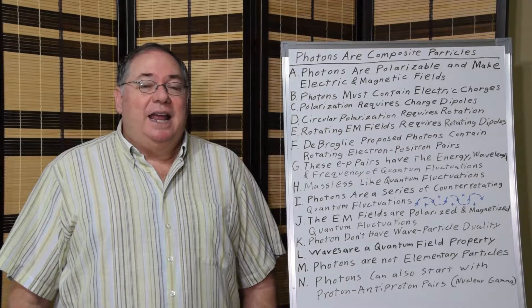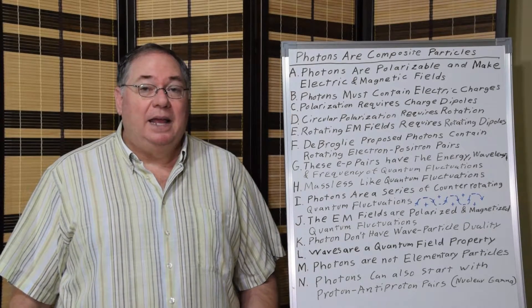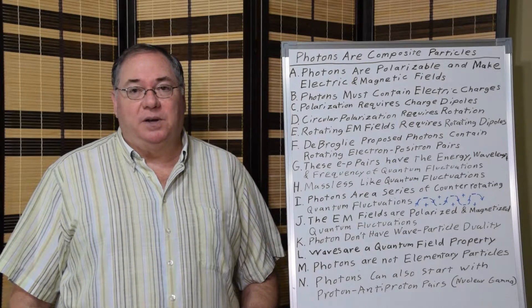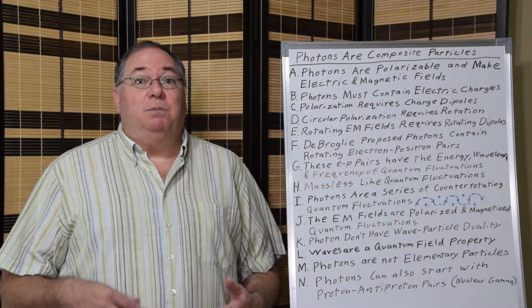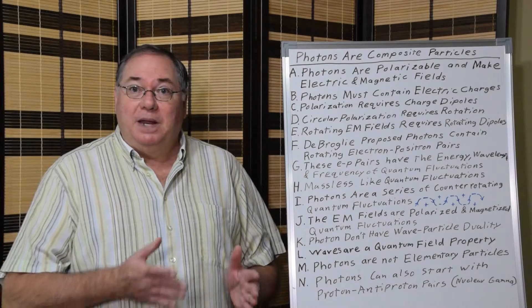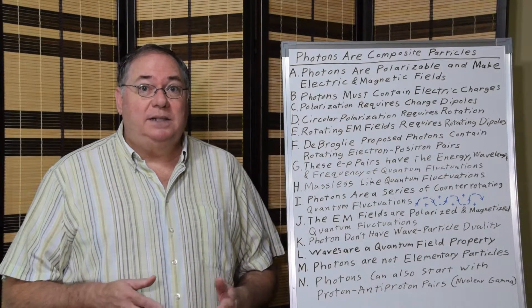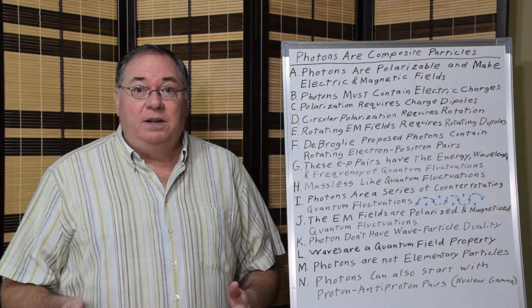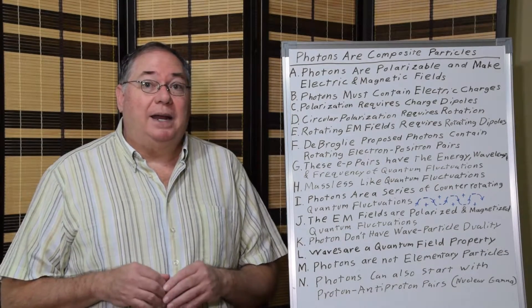To understand how and why photons are composite particles, you can start with understanding that photons are polarizable. They can be linearly polarized, they can be circularly polarized. Photons also produce electric fields and magnetic fields.